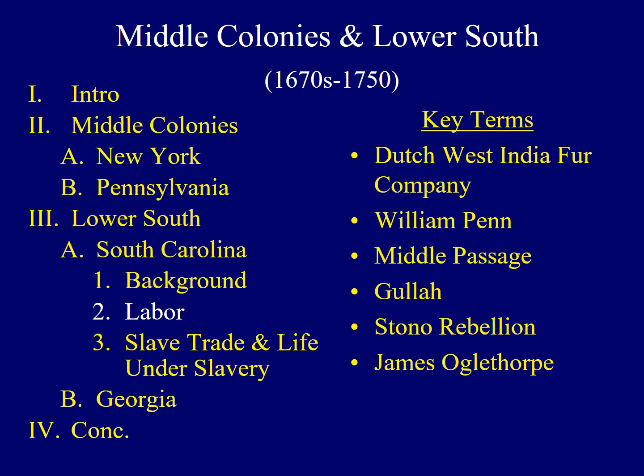Colonists searched for different sources of labor to work in their rice fields. Native Americans were tried initially, and there was an extensive Indian slave trade where Native Americans were used as laborers. However, many escaped, and traders also noticed a large profit could be made by transporting Indian slaves to regions outside the Carolinas. Next, indentured servants were used. White servants made up a large segment of the labor force, but once exposed to the harsh climate and diseases such as yellow fever and malaria, many became sick or died. Eventually, they settled on African slaves.